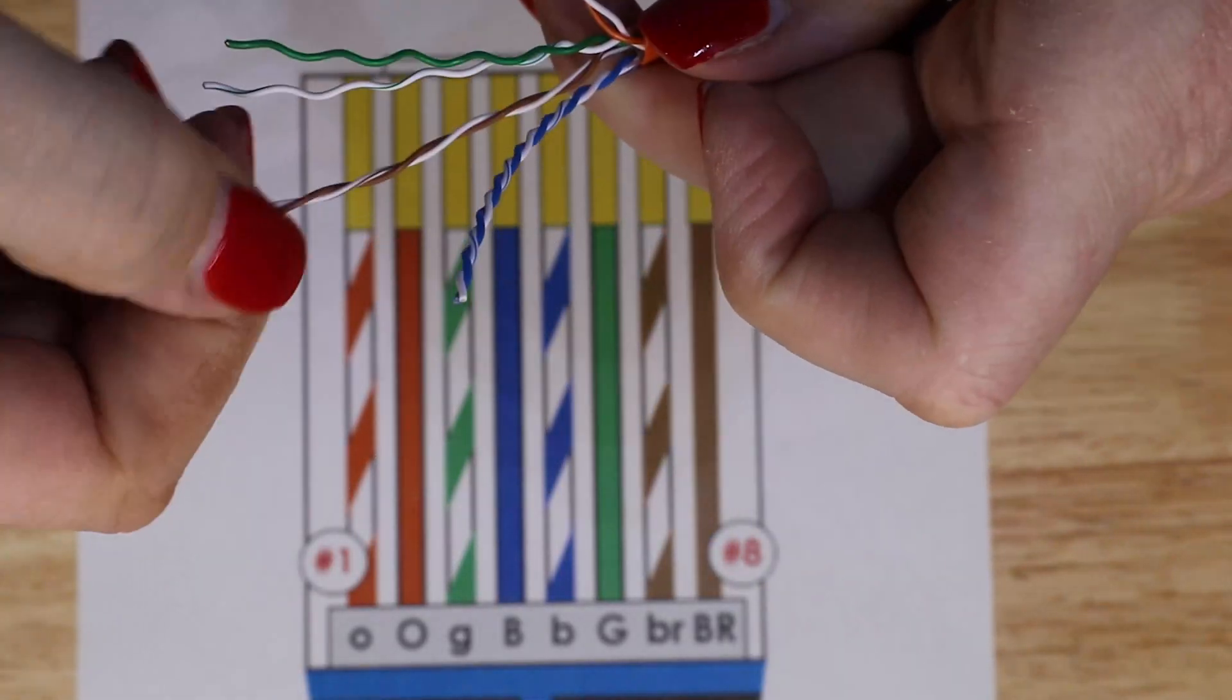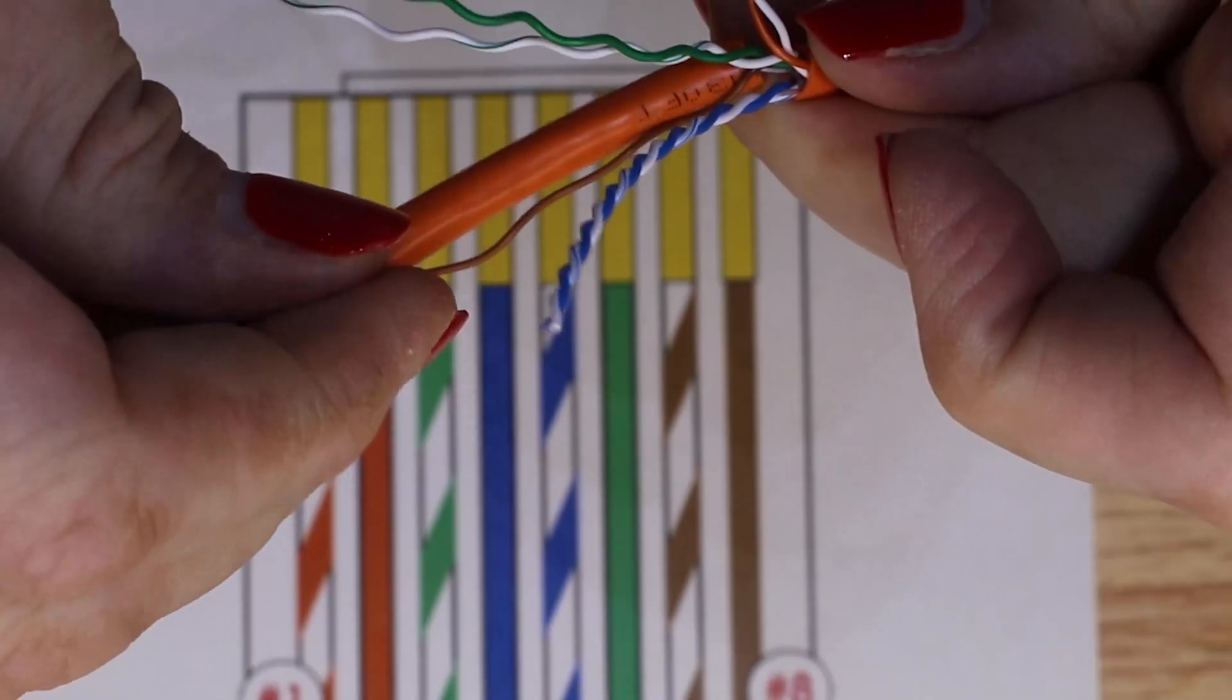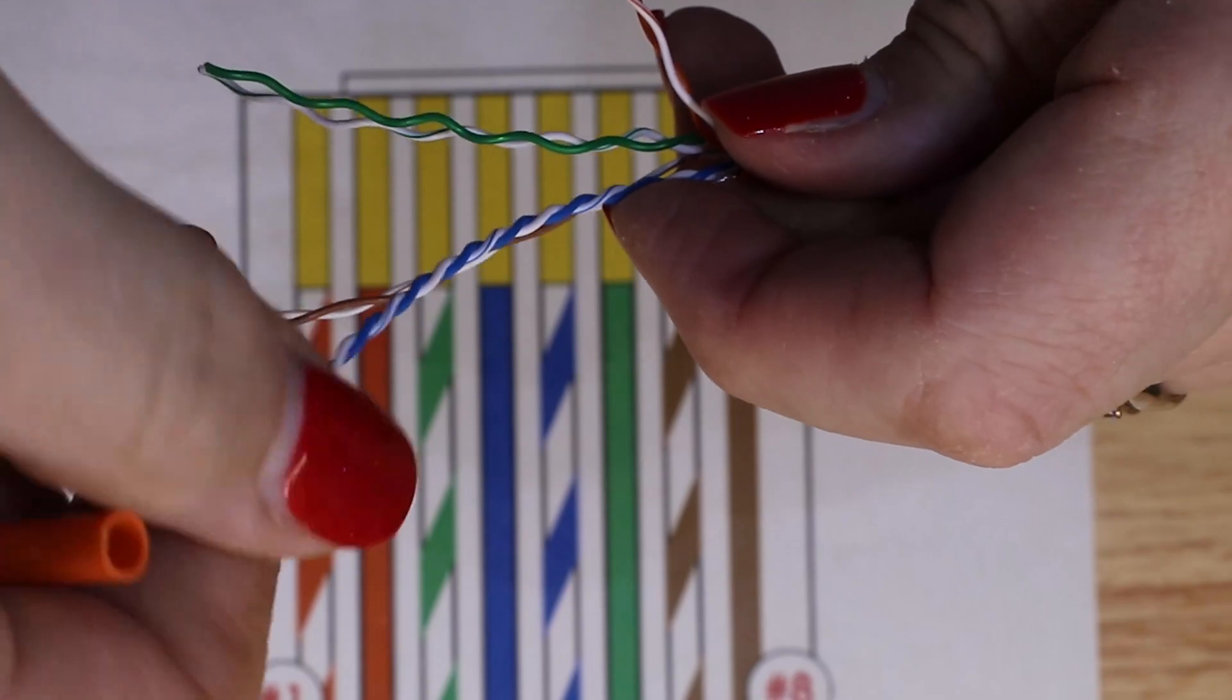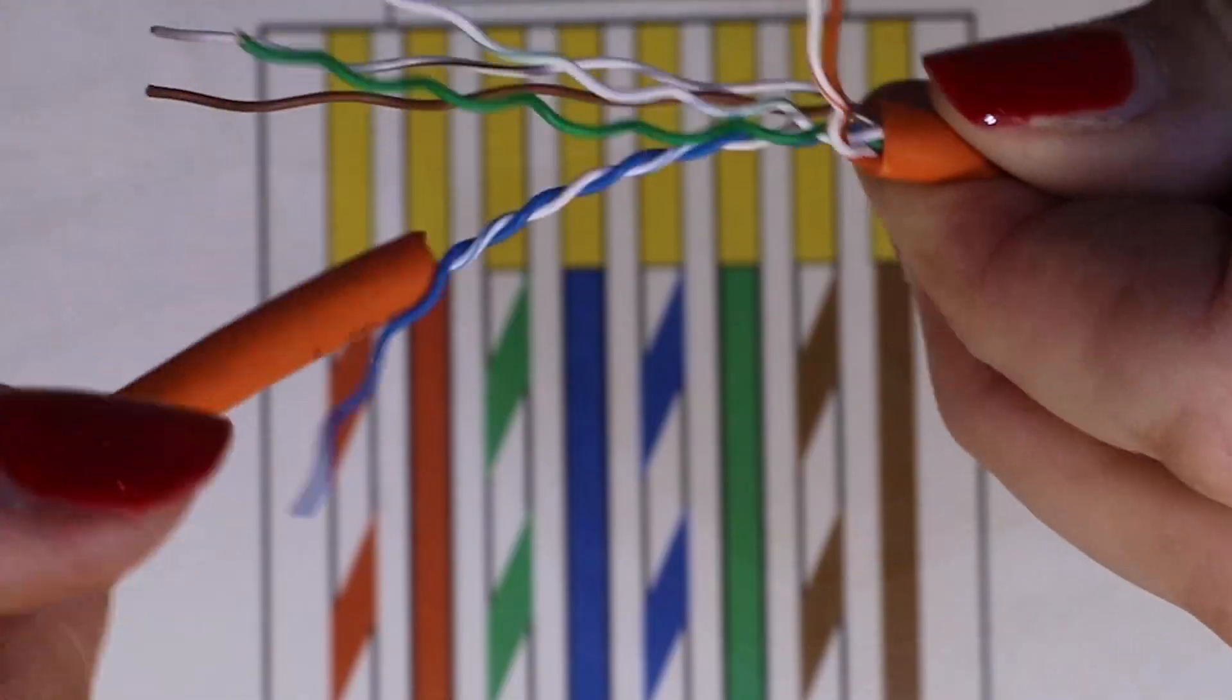You may notice that the pairs are twisted at different lengths. This twist actually helps reduce crosstalk amongst the four pairs, with the blue and striped blue being twisted the tightest.